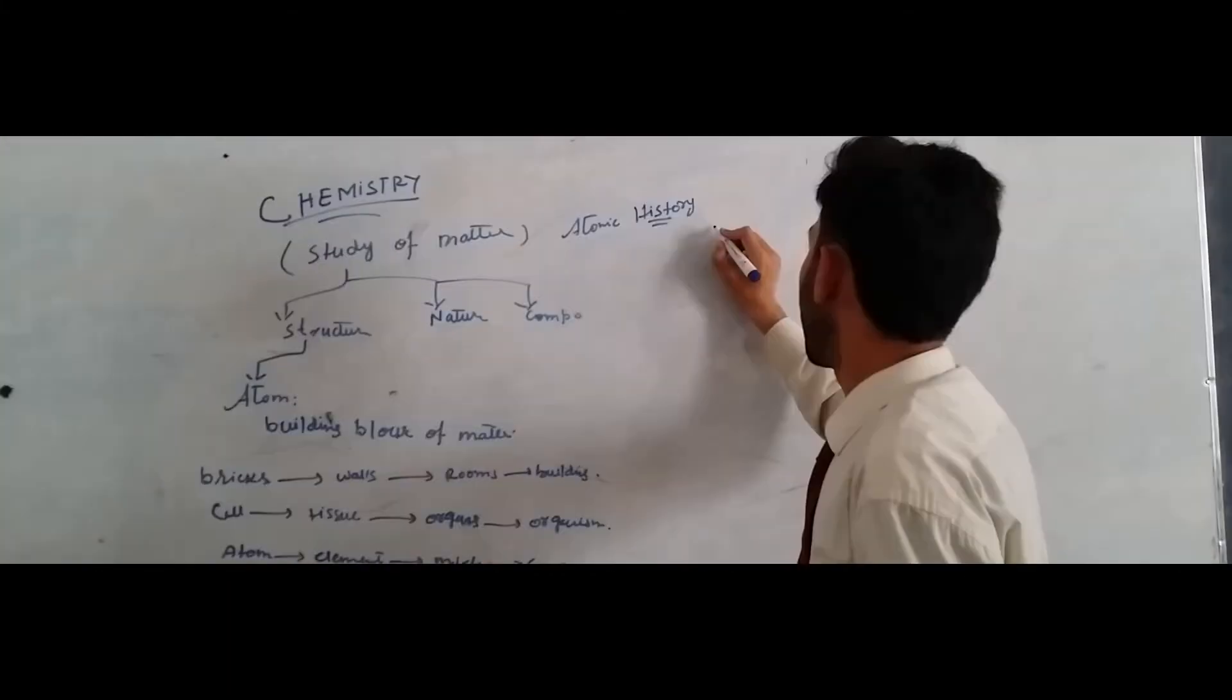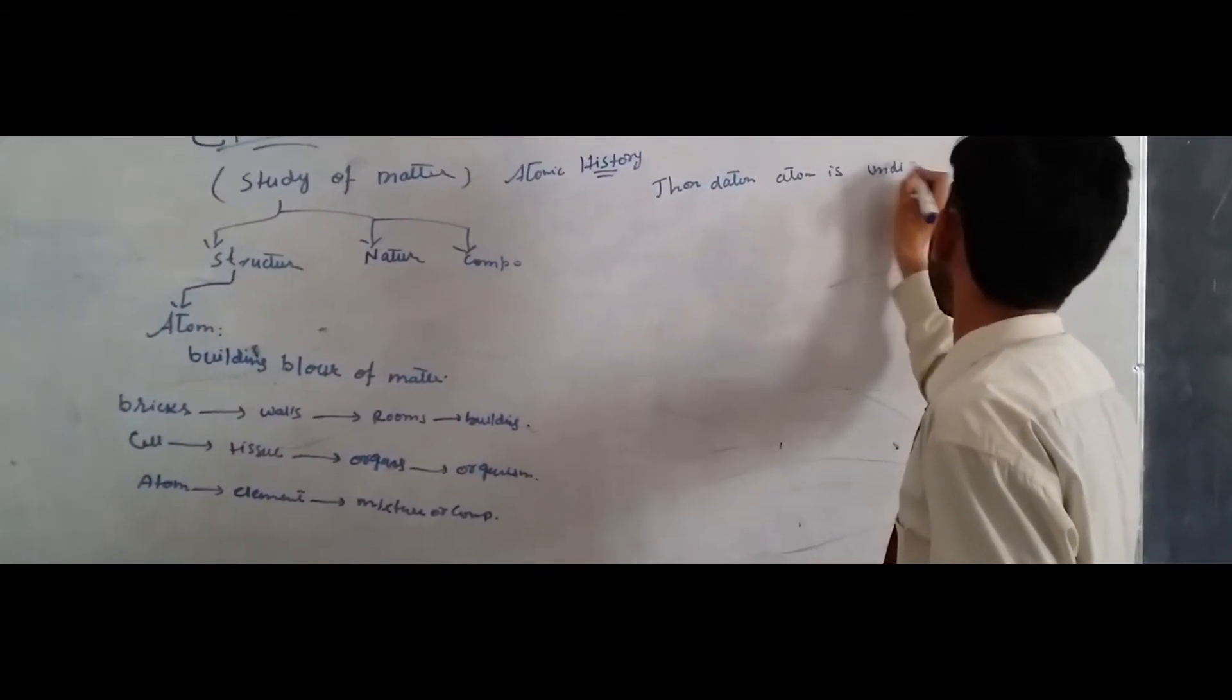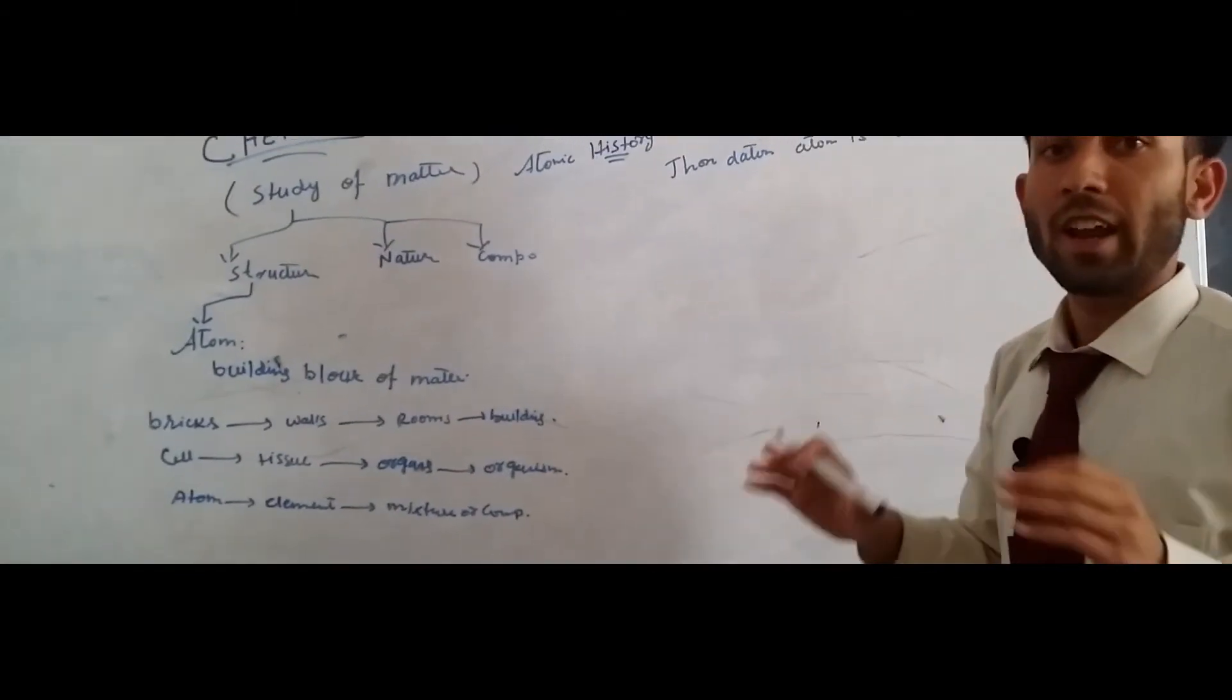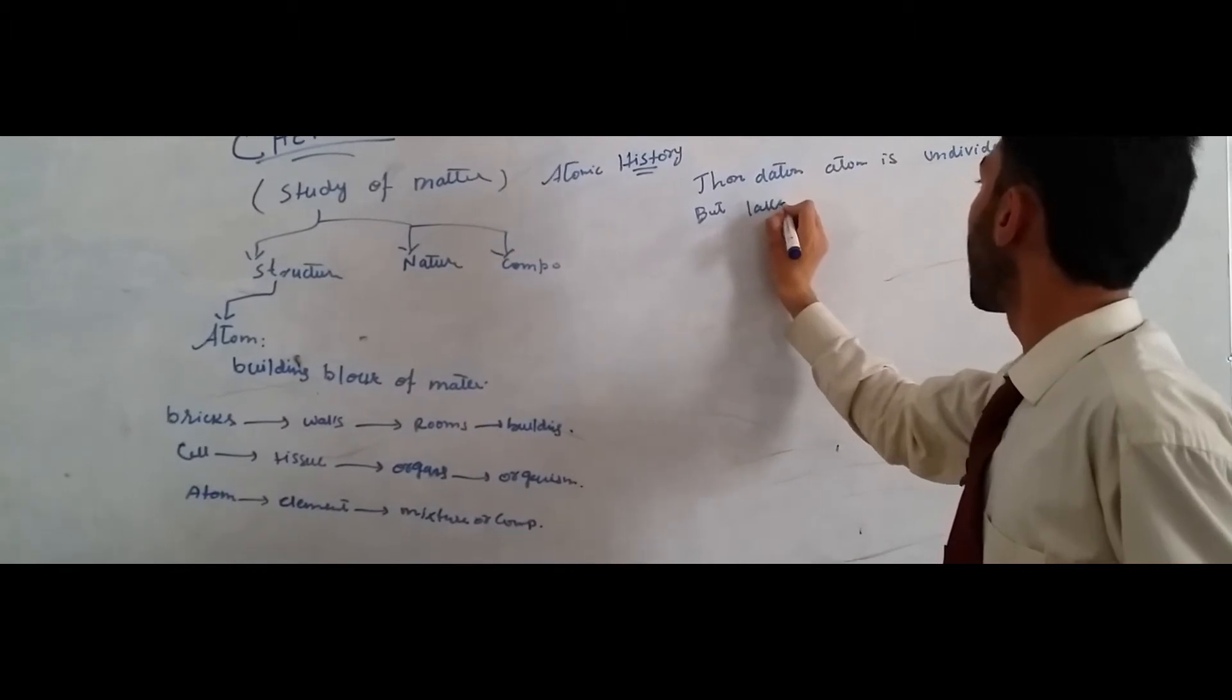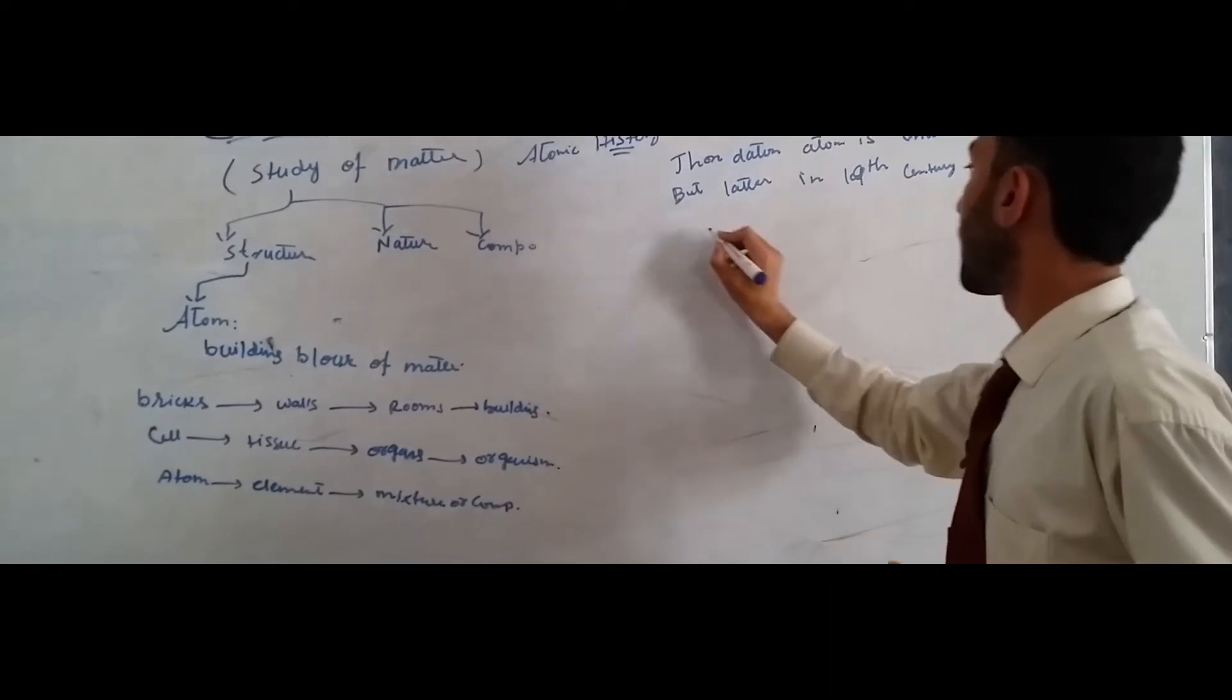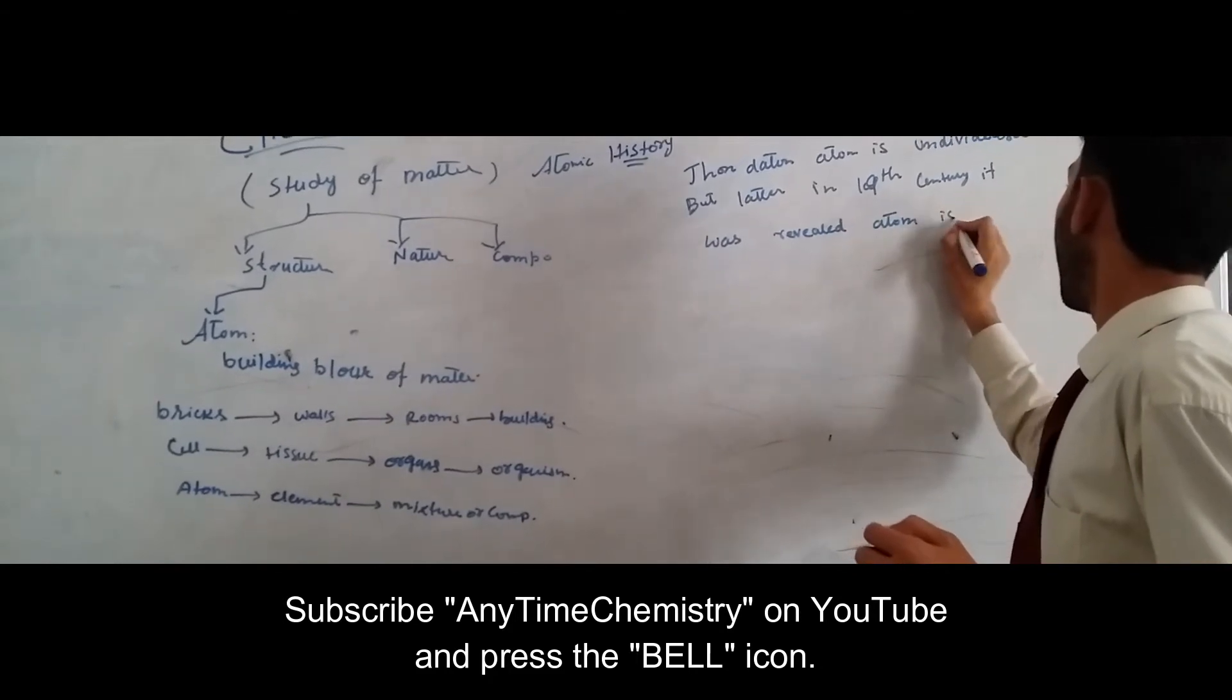John Dalton was the first person who explained that atom is undividable. What does it mean? It means no smaller unit is present in atom, that atom is not made of anything else. Atom is a basic entity. But later in 19th century it was revealed atom is composed of particles.